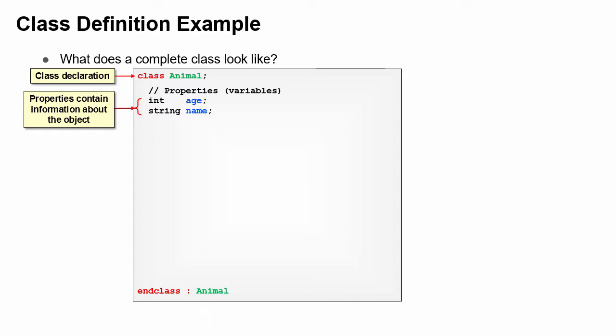Properties contain a value specific to an instance of this class, such as the name of the animal. The function new is also known as the constructor. It allocates memory and initializes properties. This will be discussed more later on.